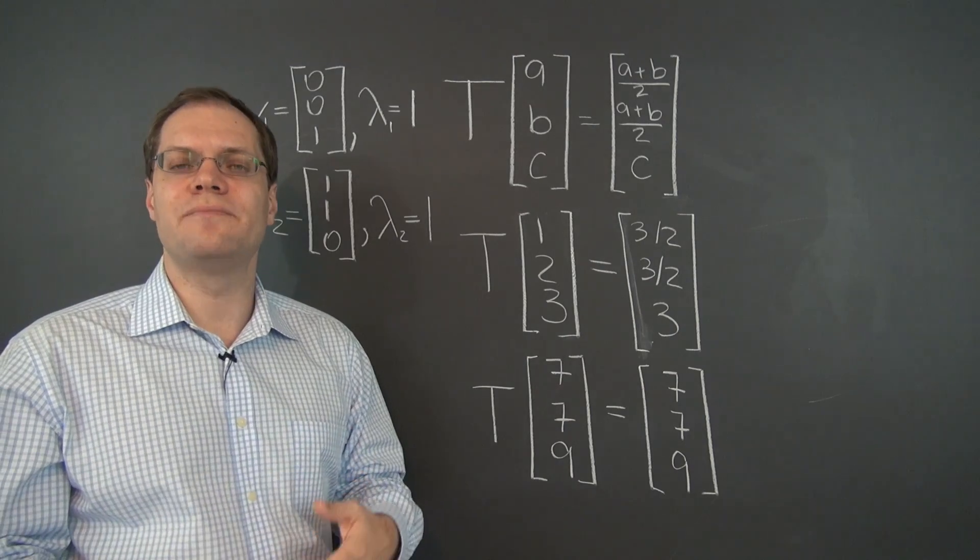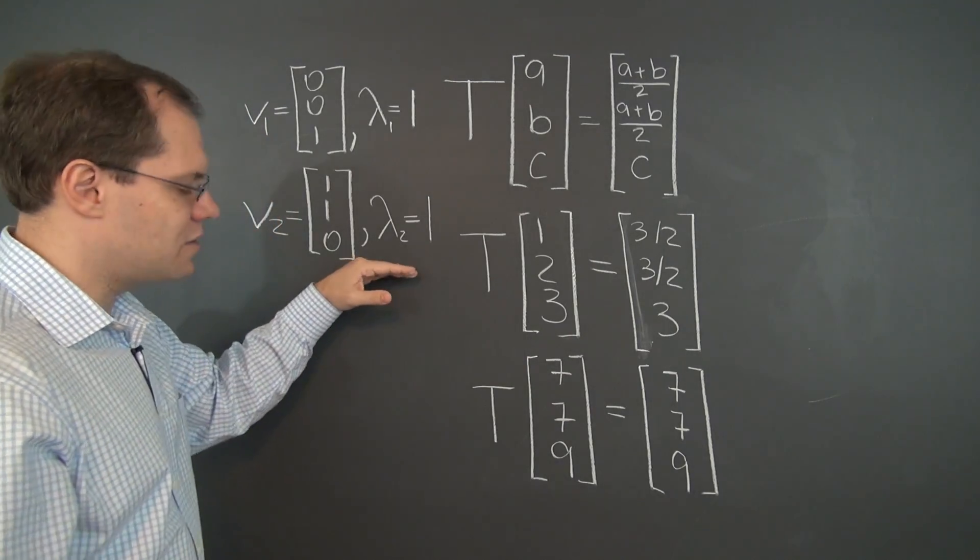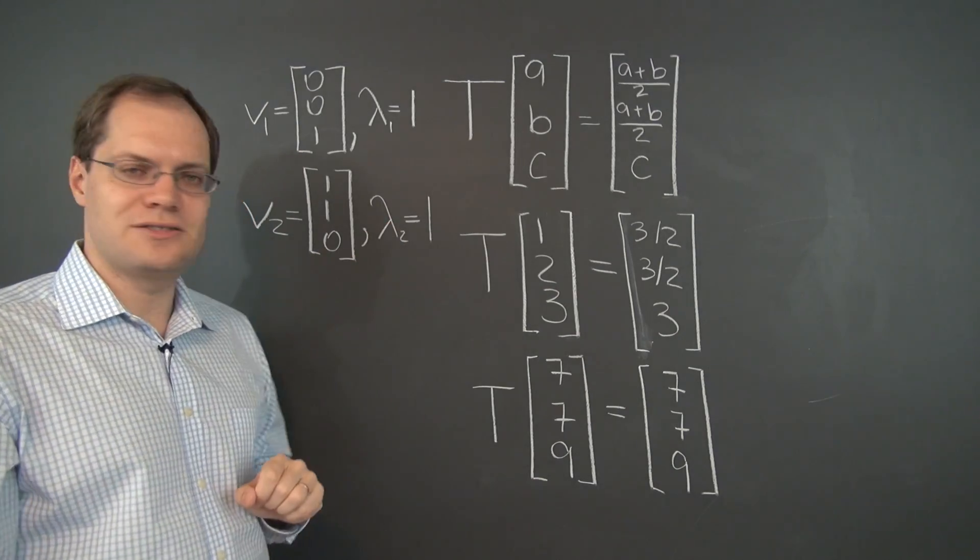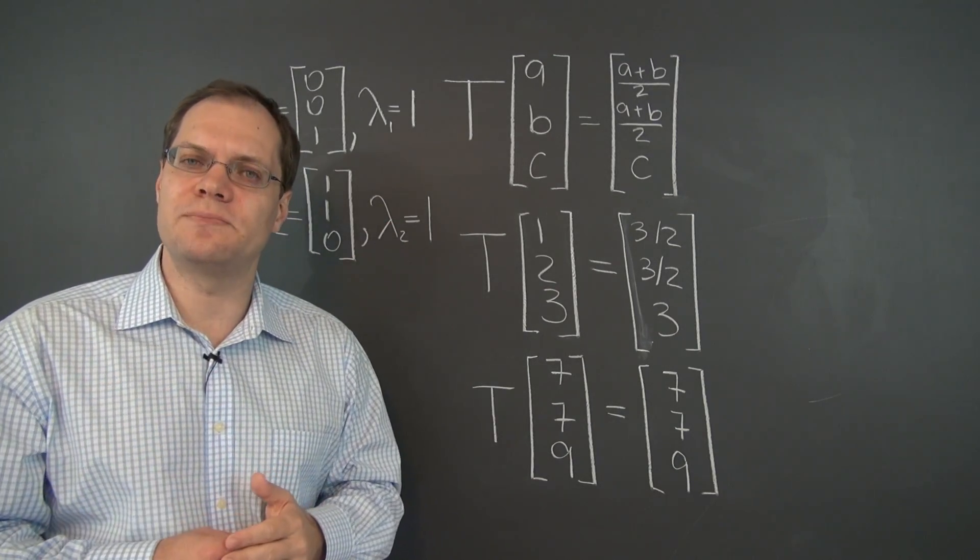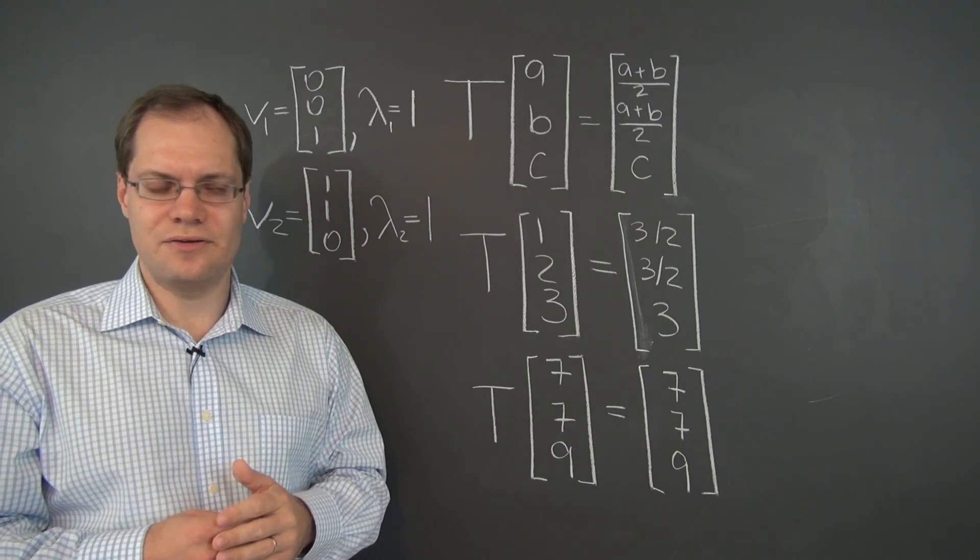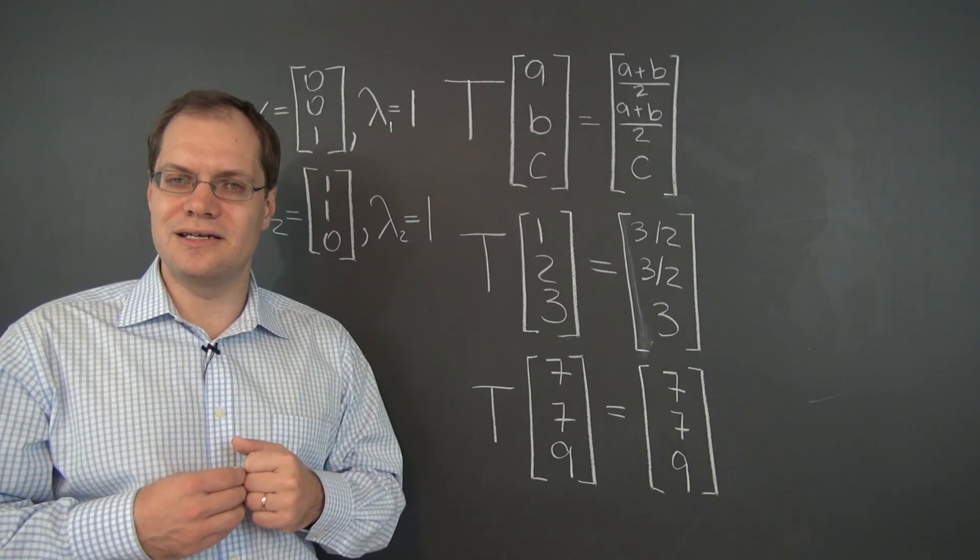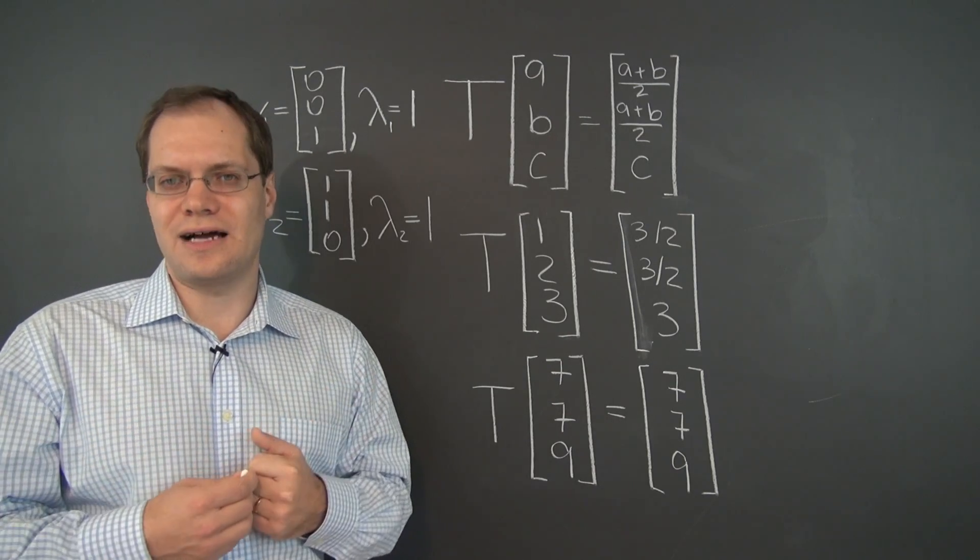So it's an eigenvector in its own right because these two eigenvectors correspond to the same eigenvalue. If they didn't correspond to the same eigenvalue, then that would simply not be true, that their linear combination is another eigenvector.